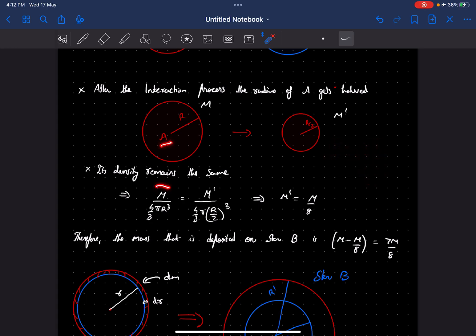Finally the mass of planet A, let's assume it to be m dash, and the radius we know becomes half. From solving this we'll get m dash as m by 8.